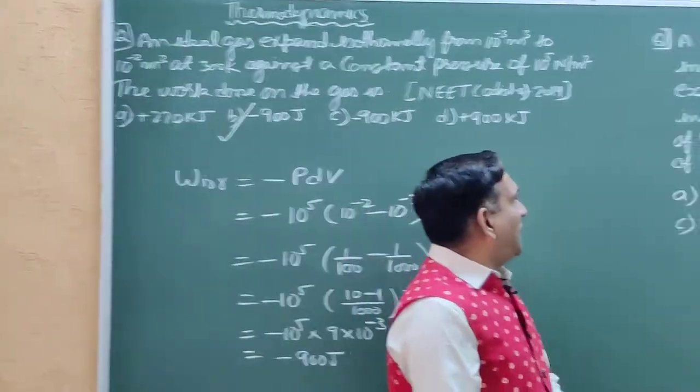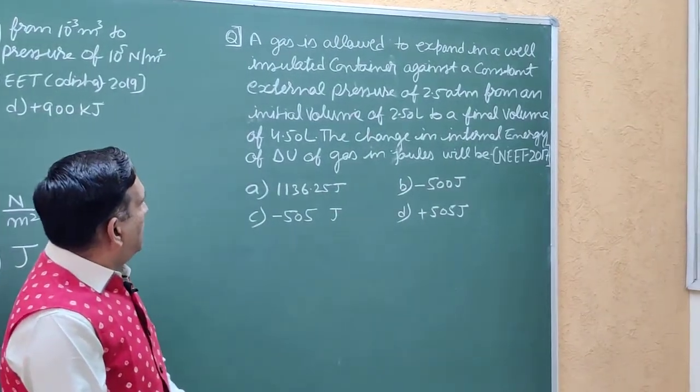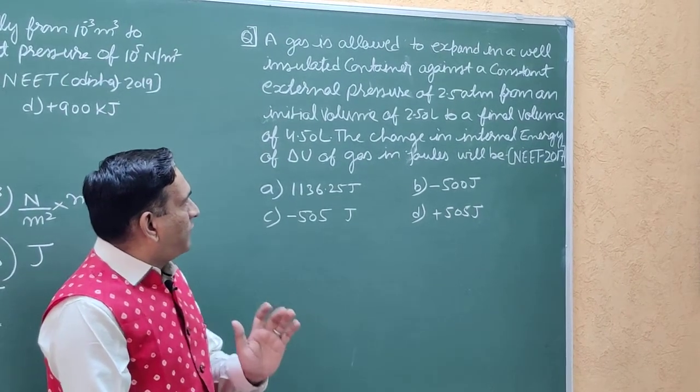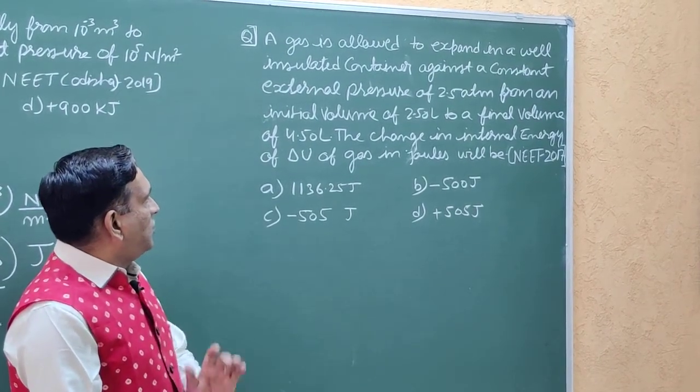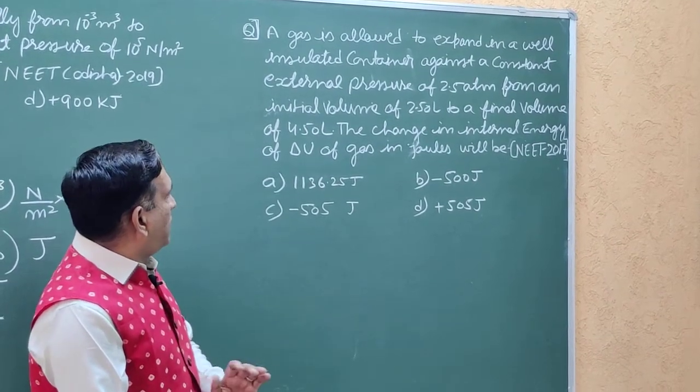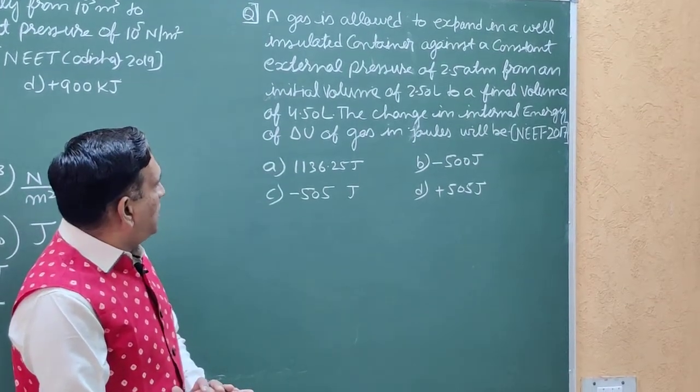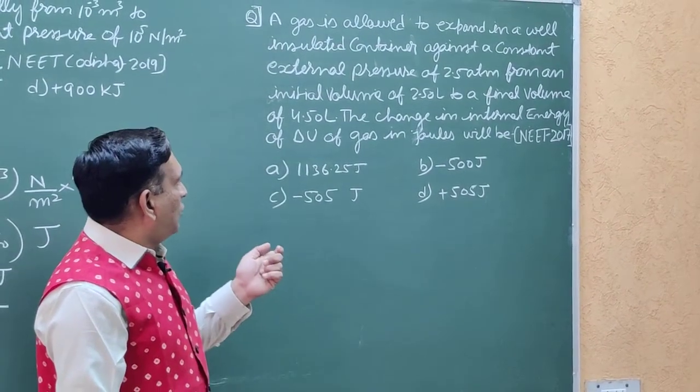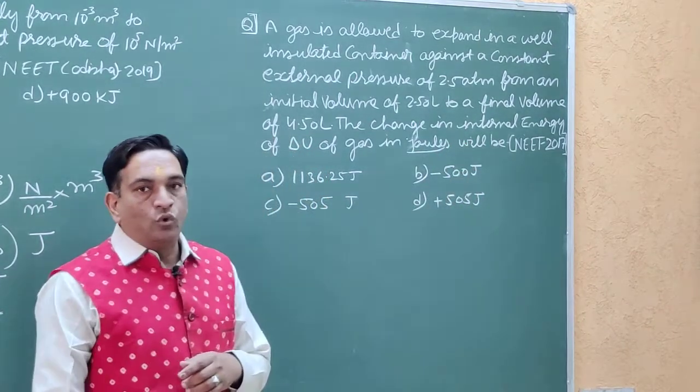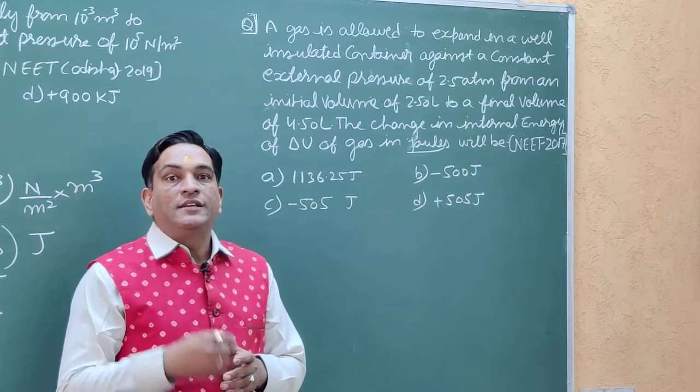Today's question: A gas is allowed to expand in a well-insulated container against a constant external pressure of 2.5 atmosphere from an initial volume of 2.50 litre to a final of 4.50 litre. The change in internal energy of the gas in Joule will be. The change in internal energy in Joule, that is when you use SI units.